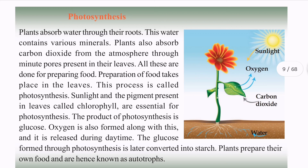What is oxygen? Oxygen is released during daytime. That is beneficial for animals. Plants prepare their own food and are called autotrophs.